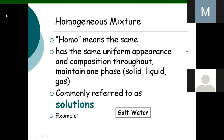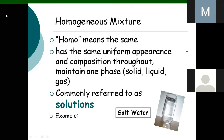Homo means the same. A homogeneous mixture has the same uniform appearance and composition throughout, and maintains one phase. It could be solid, liquid, or gas, and is commonly referred to as a solution. An example is salt water — salt is mixed with water, and this is actually a homogeneous mixture.